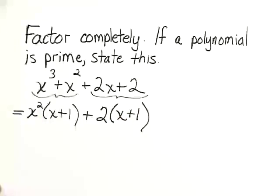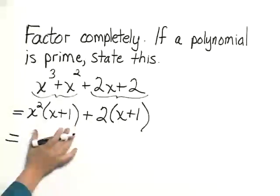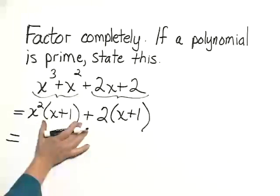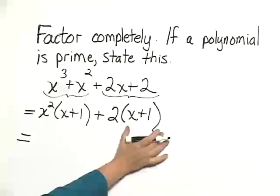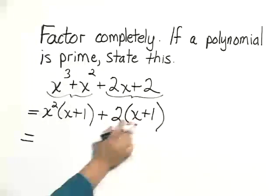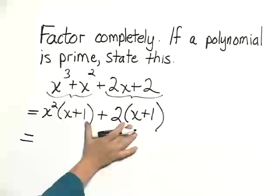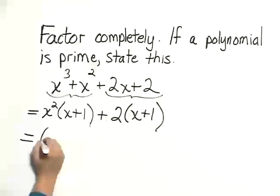And those are equal. When we have a binomial that is a factor here and a factor here, and notice it's the same binomial, we can now factor that binomial out and treat it as a common factor.